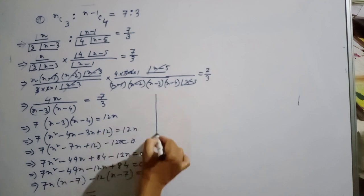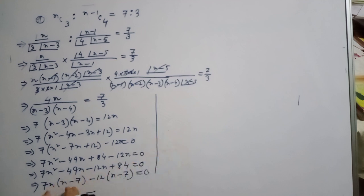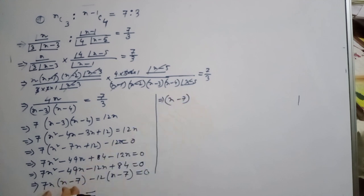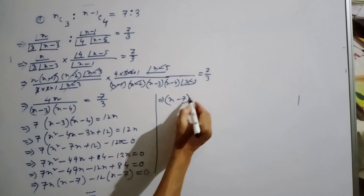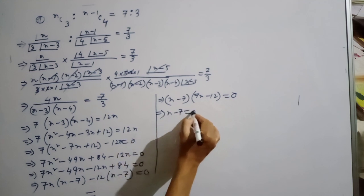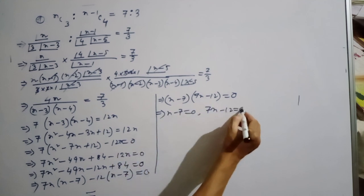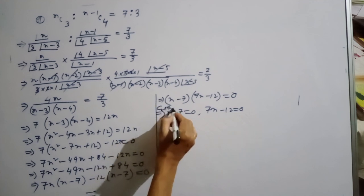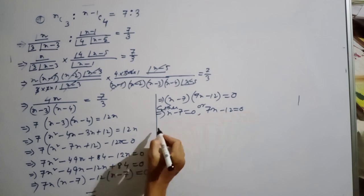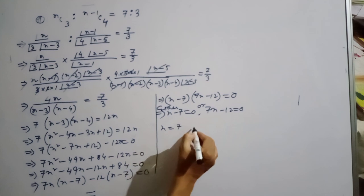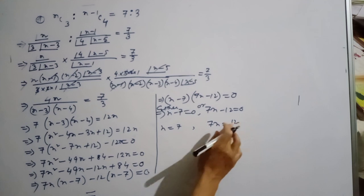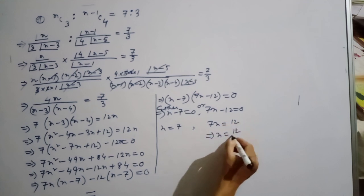Factorizing: n(n minus 7) minus 12(n minus 7) equals 0, so (n minus 7)(n minus 12) equals 0. Therefore n equals 7, or 7n minus 12 equals 0 giving n equals 12 by 7, which is not possible. Therefore n equals 7.